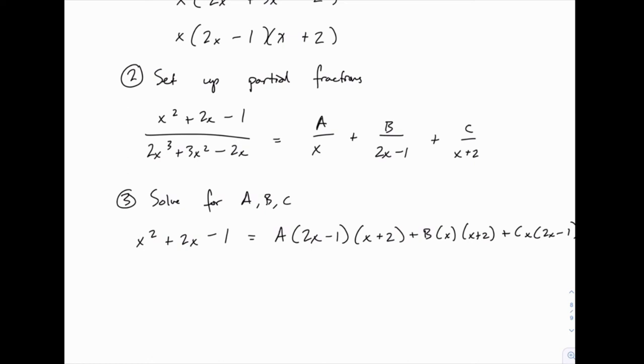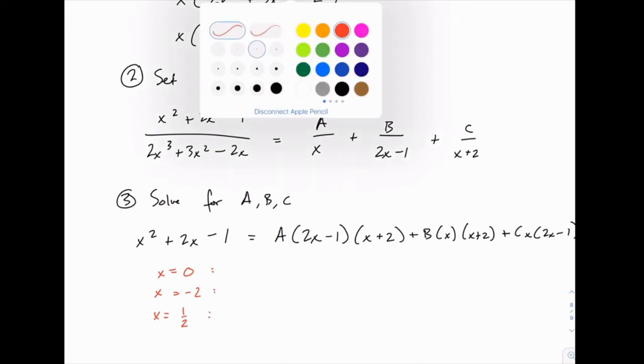Now when we go to solve for A, B, and C, we can plug in helpful values of x. x equals 0 will make several of the terms be 0. x equals negative 2 will be helpful. And then x equals 1/2 will make the 2x - 1 terms drop off. For that one, we'll have to deal with fractions a little bit, but it's not too bad.